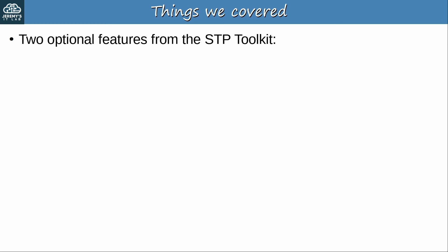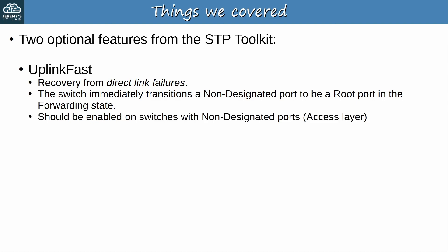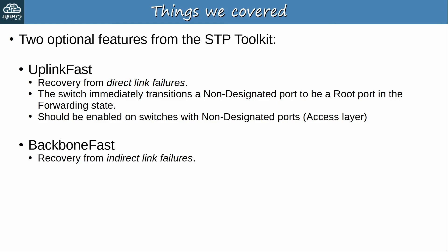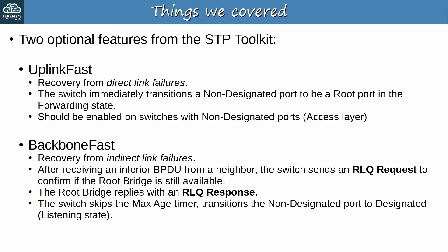Before the quiz, let's review what we covered. First, UplinkFast speeds up recovery from direct link failures — the switch immediately transitions a non-designated port to be a root port in the forwarding state, skipping the listening and learning states. It should be enabled on switches with non-designated ports, so access layer switches. Then BackboneFast speeds up recovery from indirect link failures. After receiving an inferior BPDU from a neighbor, the switch sends an RLQ request to confirm if the root bridge is still available, and the root bridge replies with an RLQ response. After receiving the response, the switch skips the max age timer and transitions the non-designated port to designated in the listening state — cutting off about 20 seconds from the process. BackboneFast should be enabled on all switches if you're using it.